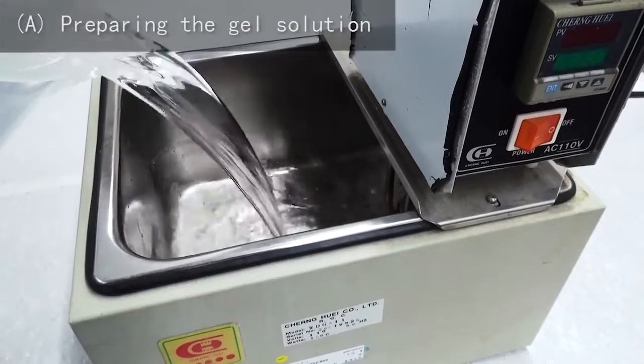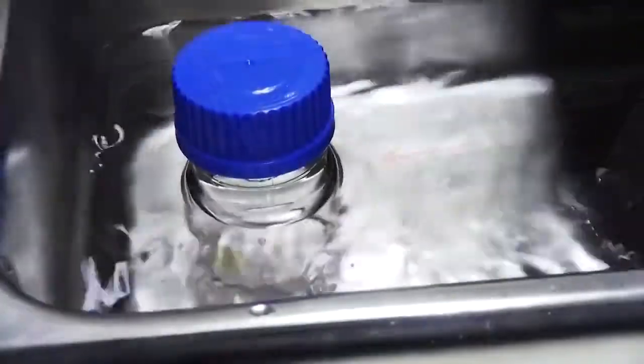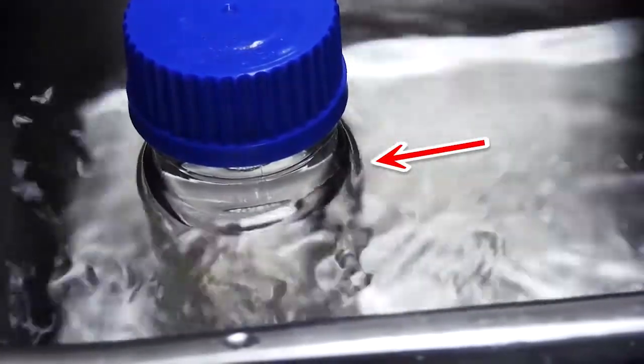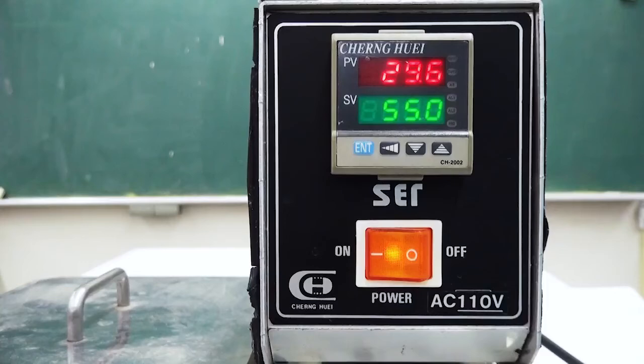First, switch on the water bath and add enough water so the water level will be higher than the gel solution level. Set the water bath temperature to 55 degrees Celsius.